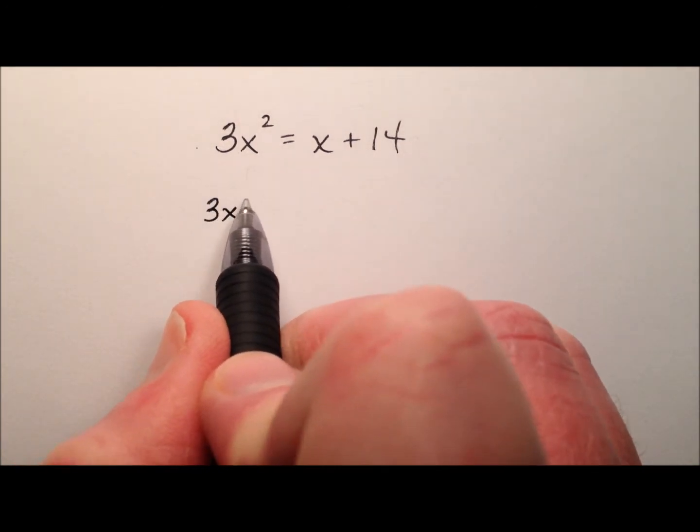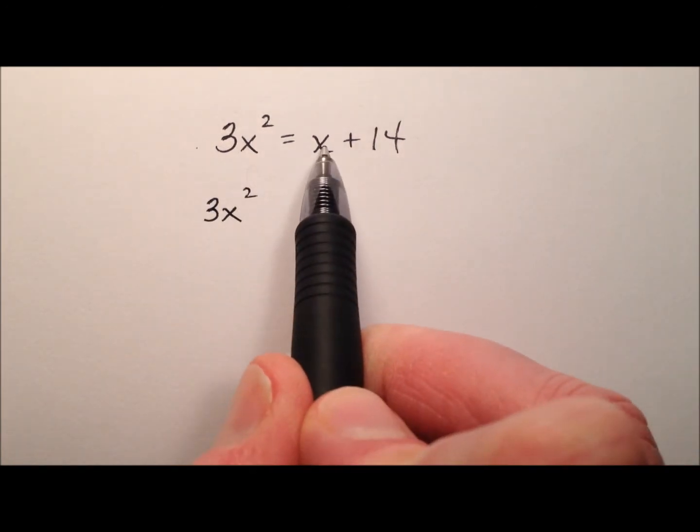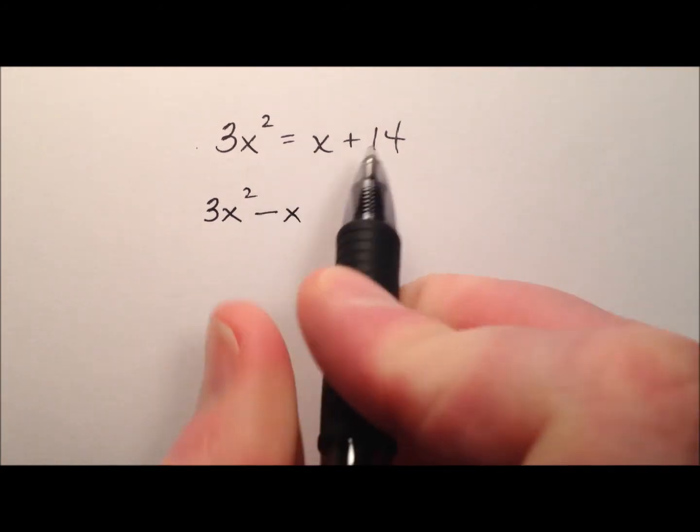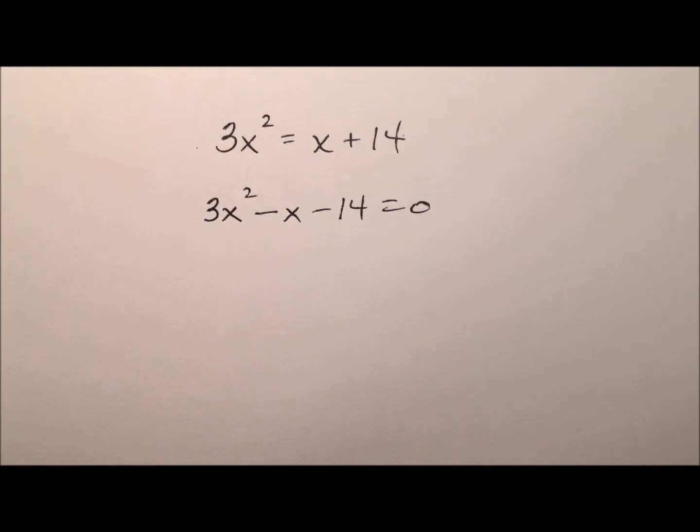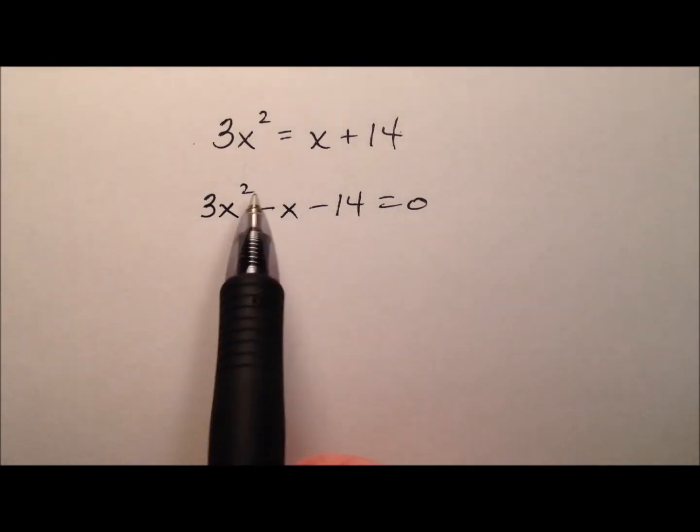The 3x squared is already over there. So I'm going to subtract the x, minus x, and subtract the 14, minus 14. And now that does equal 0. So that's where I want to be.